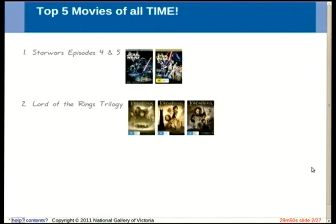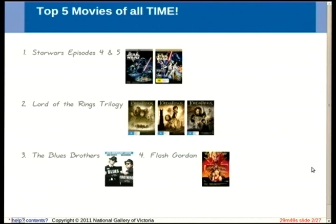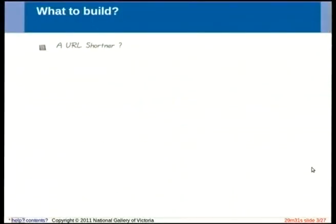So I'm going to talk about something completely different: my top five movies of all time. You may be wondering why I'm inflicting my rather poor choices of movies on you. That's primarily because I thought, what can I demo with Redis? URL shorteners — everyone's got one. Twitter clones — heaps of them. There's Hello World apps. But how about a rating service for your DVDs? Googling around, I couldn't find anyone who'd done that with Redis or many other NoSQL databases, so I thought, let's give it a shot.